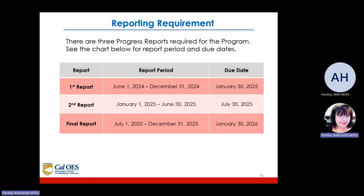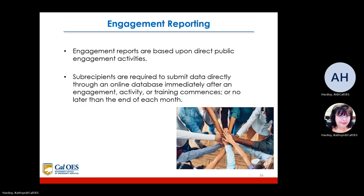There are three progress reports, all listed in your RFP. You'll notice the due dates have a 30-day special date for a grace period. Please look at these dates and apply them to your calendars. The engagement reports are based upon direct public engagement activities. Subrecipients are required to submit data directly through the online database immediately after an engagement activity or training commences, or no later than the end of each month.